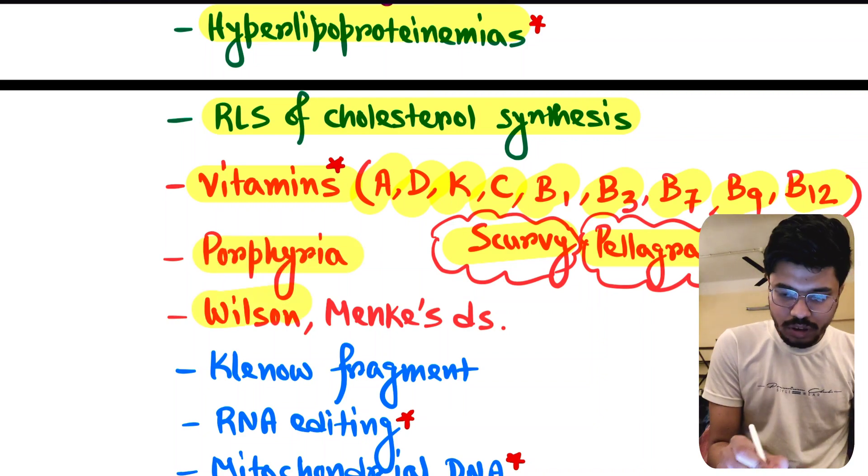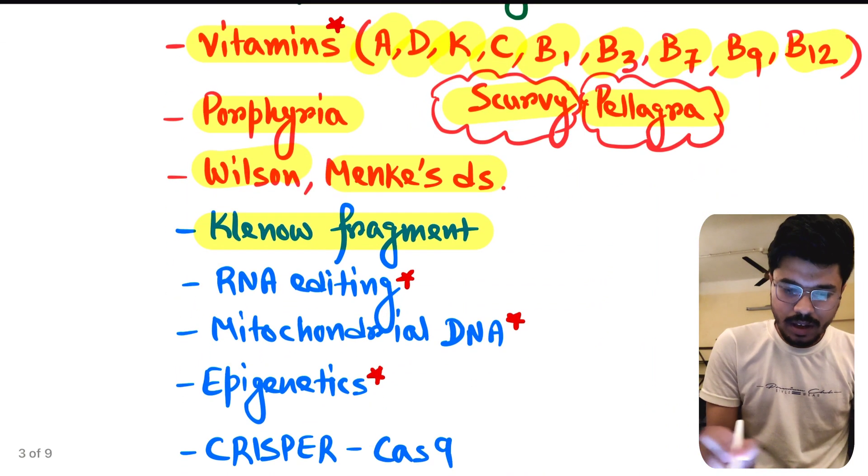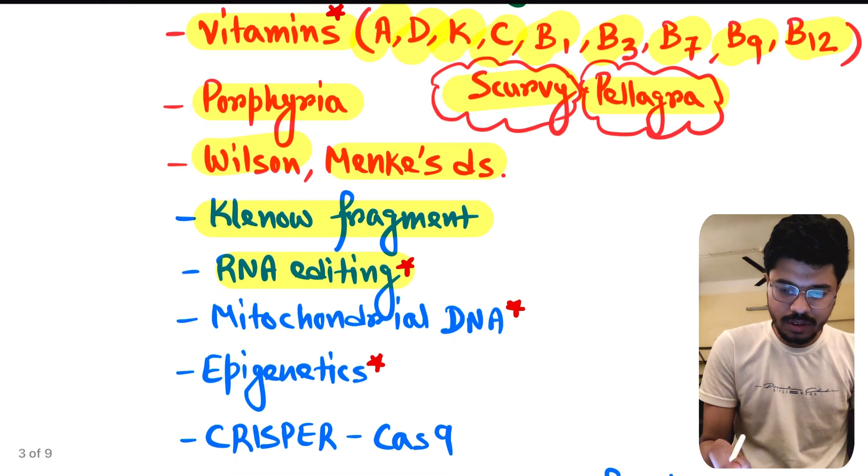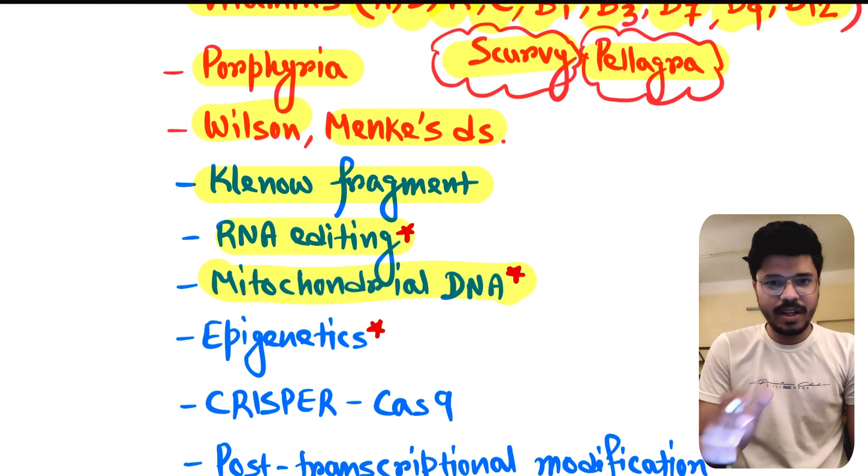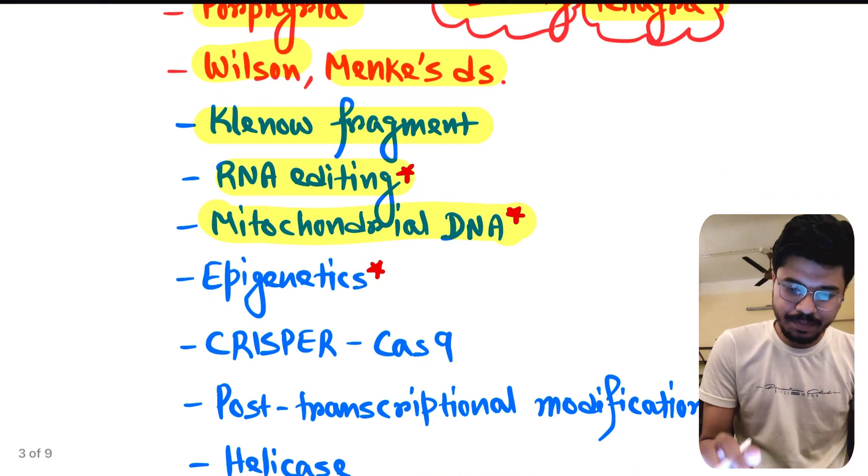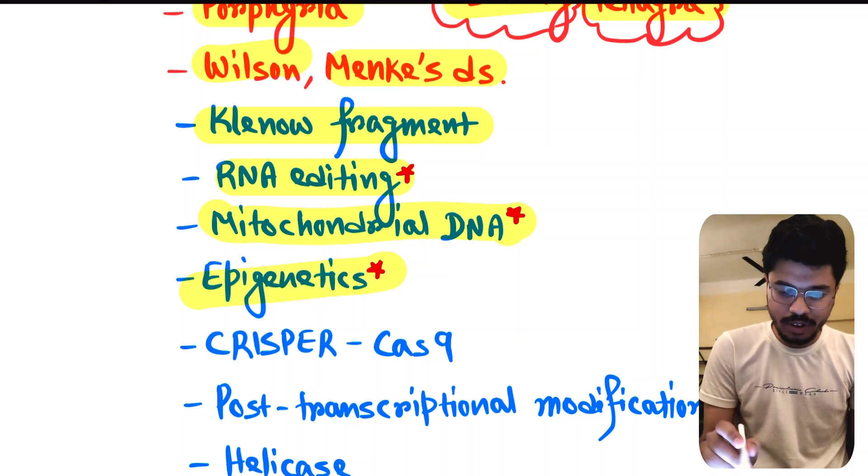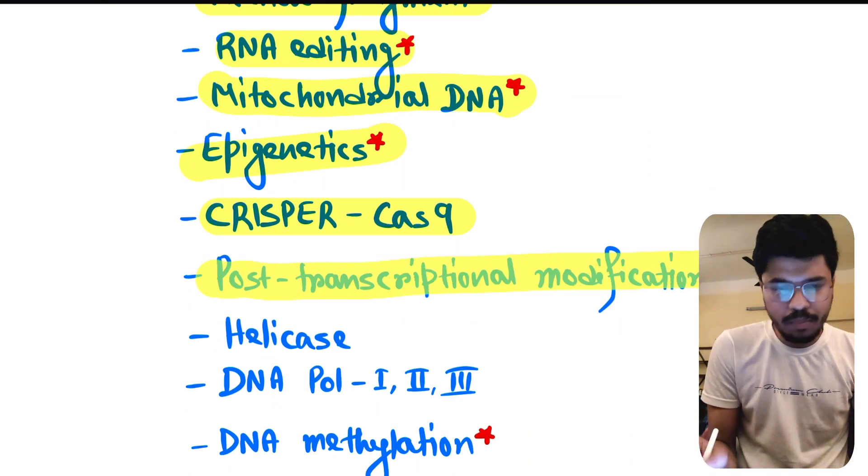Porphyria, Wilson's disease, Menkes disease, Klenow fragment, RNA editing - this is very important. Mitochondrial DNA, in every year there is a question from mitochondrial DNA. Epigenetics, one more important topic, CRISPR-Cas9, post-transcriptional modification, again important topic.